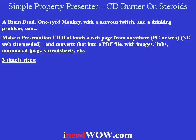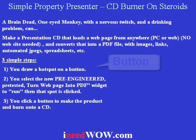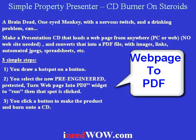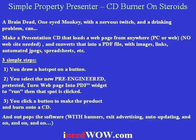Three simple steps: You create a hot spot on a button. You select a new pre-engineered, pre-tested 'Turn web page into PDF' widget to run when the spot is clicked. You click a button to make the product and burn it onto a CD, and out pops the property presentation with banners, exit advertising, auto-updating, and on and on.